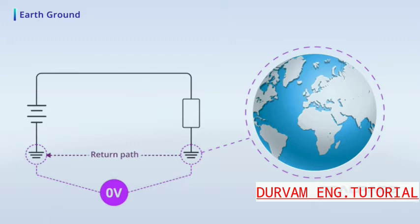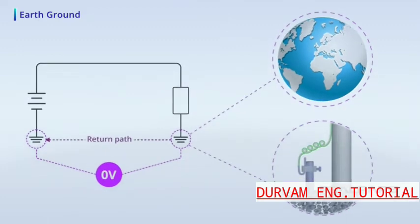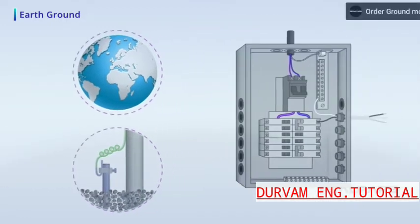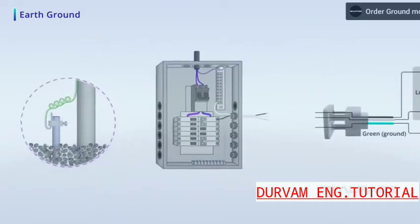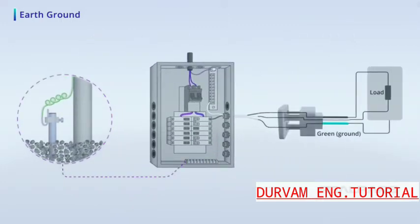You don't have to go far to see evidence of earth ground. You might be able to spot a copper rod in the ground with a heavy wire attached to it. This earth ground wire runs to your power panel and ultimately connects to all the ground terminals of every receptacle in your house.